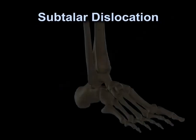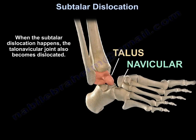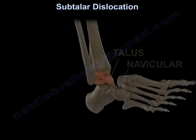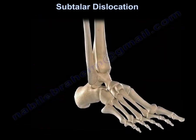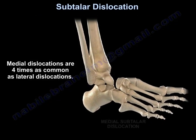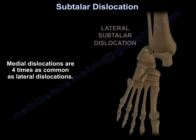Subtalar dislocation. When the subtalar dislocation happens, the talonavicular joint also becomes dislocated. There are two types of subtalar dislocation: a medial subtalar dislocation and a lateral subtalar dislocation. Medial dislocations are four times as common as lateral dislocations.